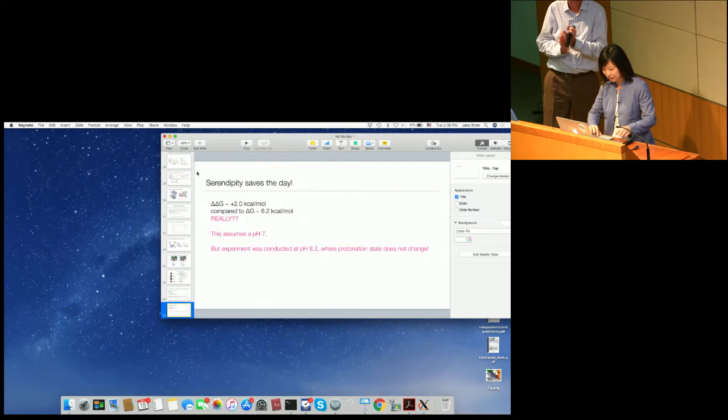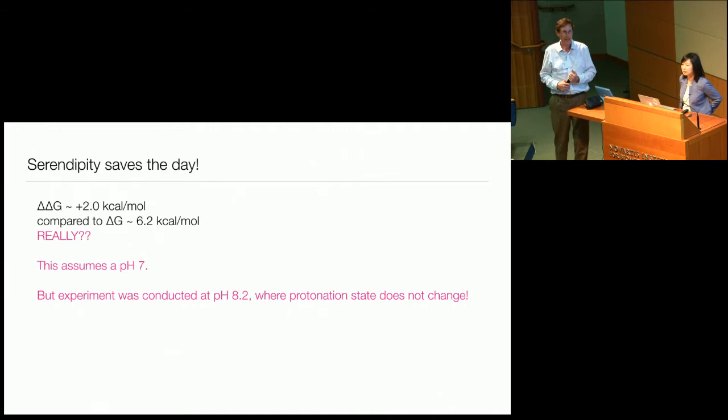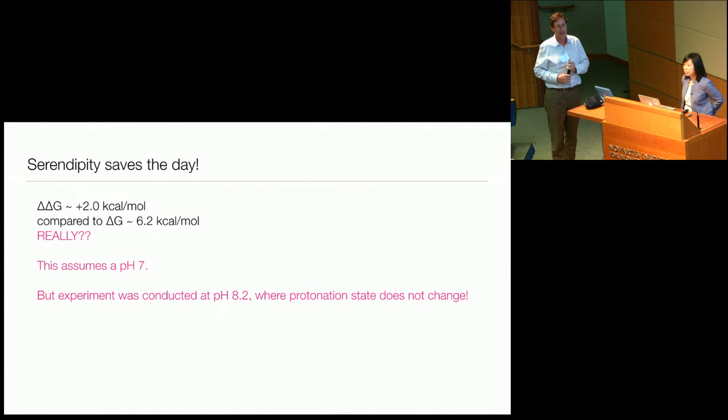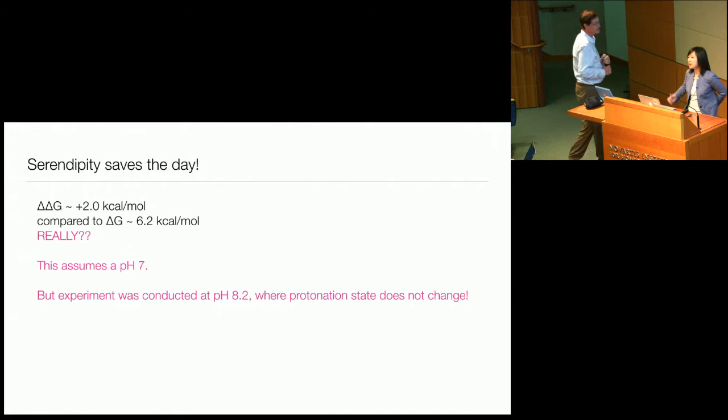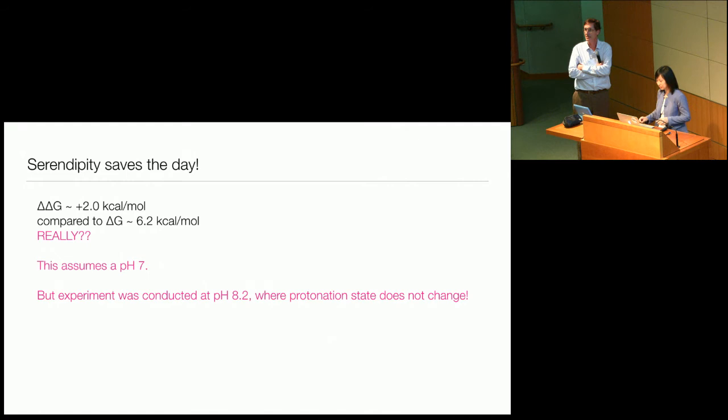Any quick questions for Yana? I'm really excited about the idea that maybe we're overestimating a lot of binding affinities by just using the protonation state assigned for the complex. Do you have any appreciation for how widespread this phenomenon might be? I would love to collaborate with someone who has a large dataset for us to look at systematically how much we're off due to protonation state change.